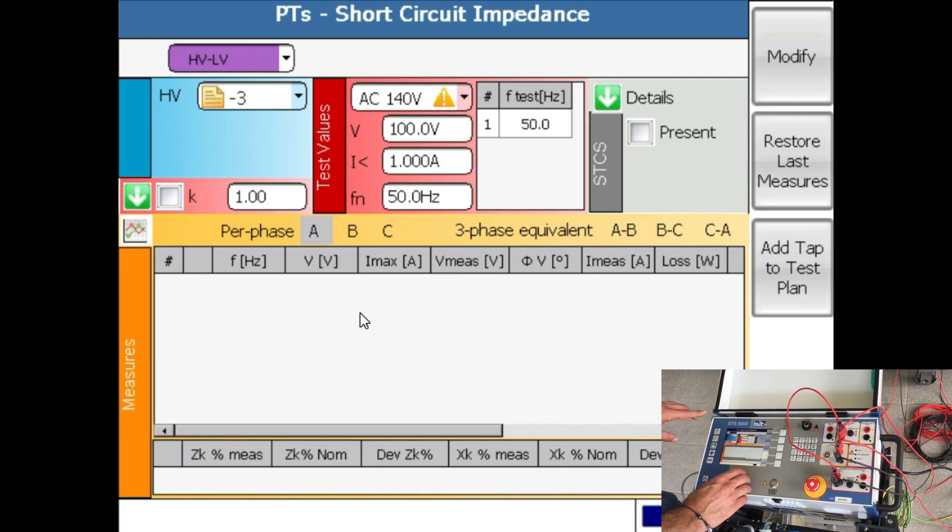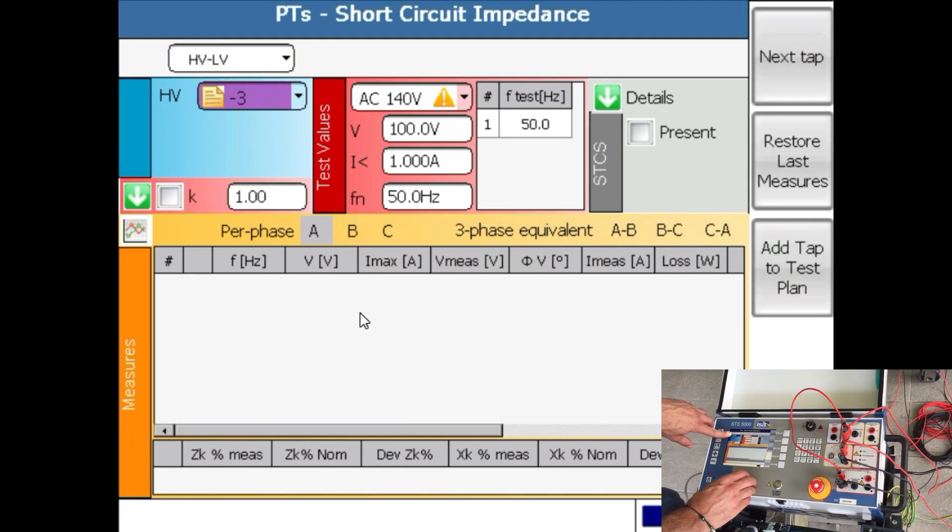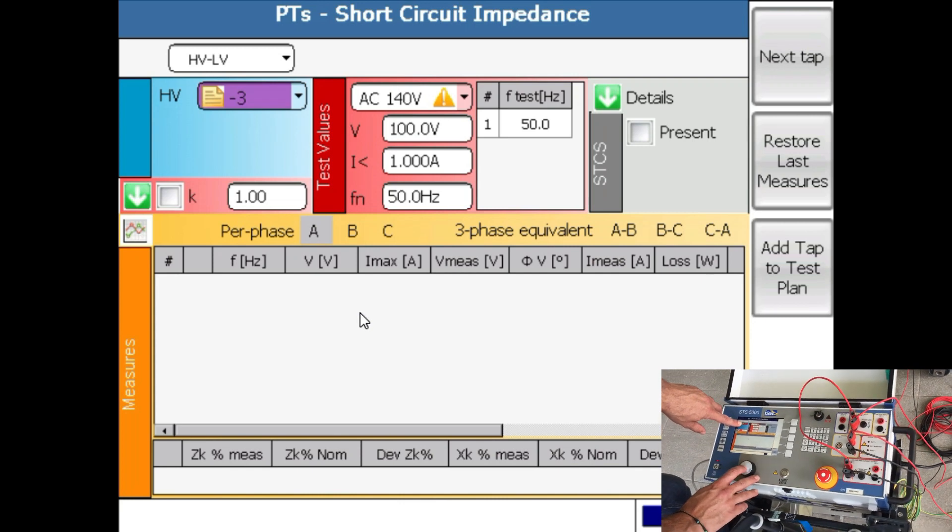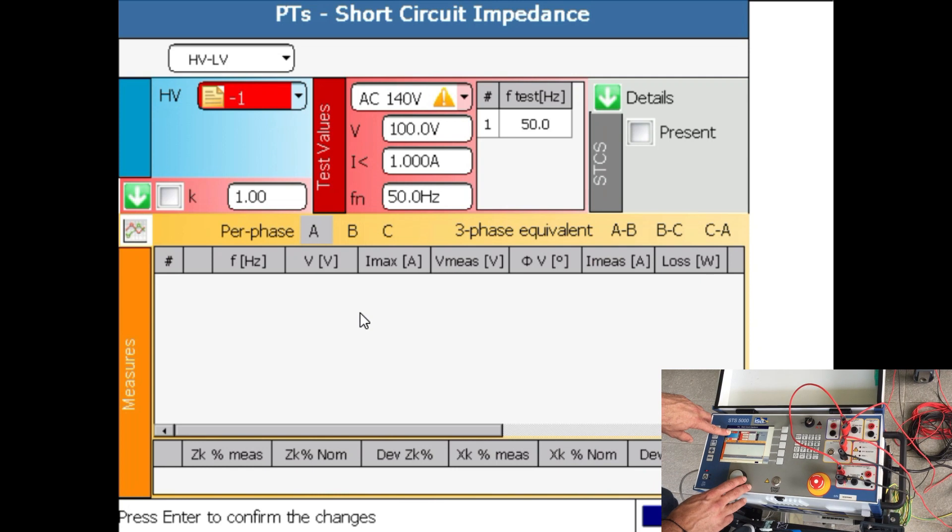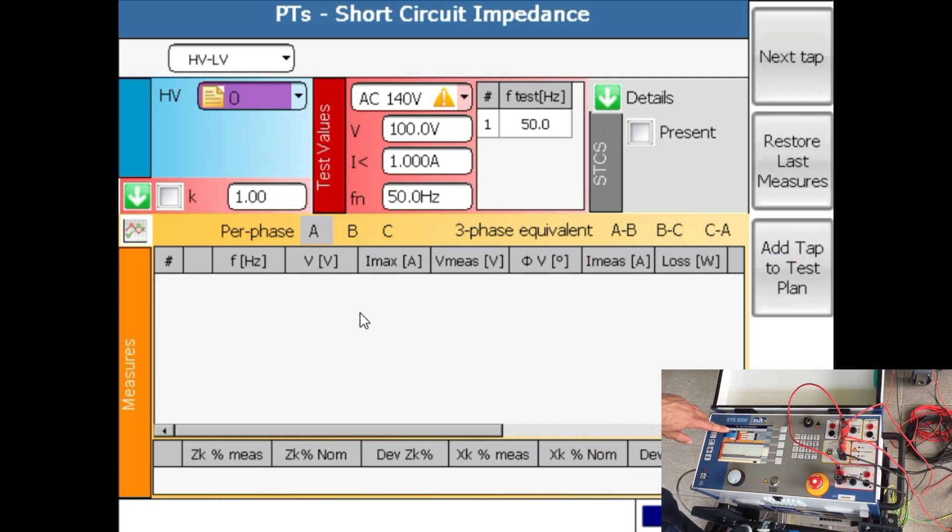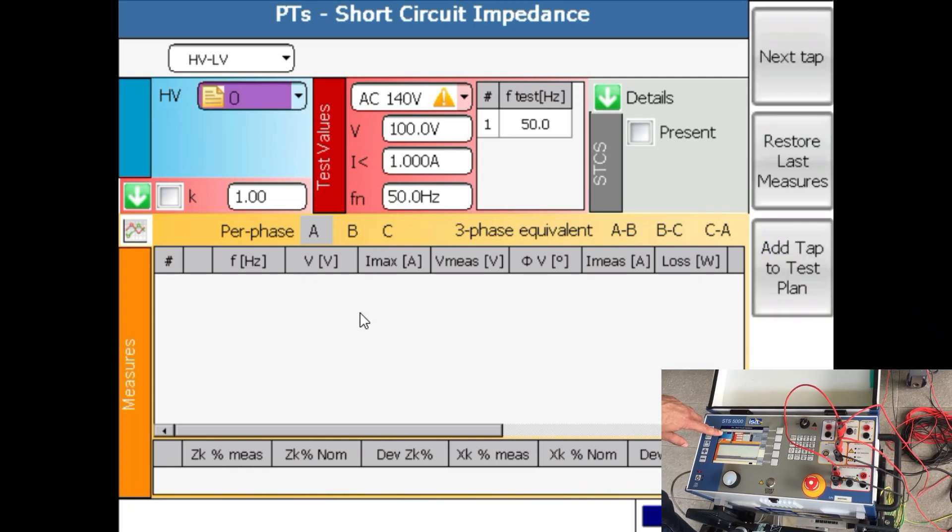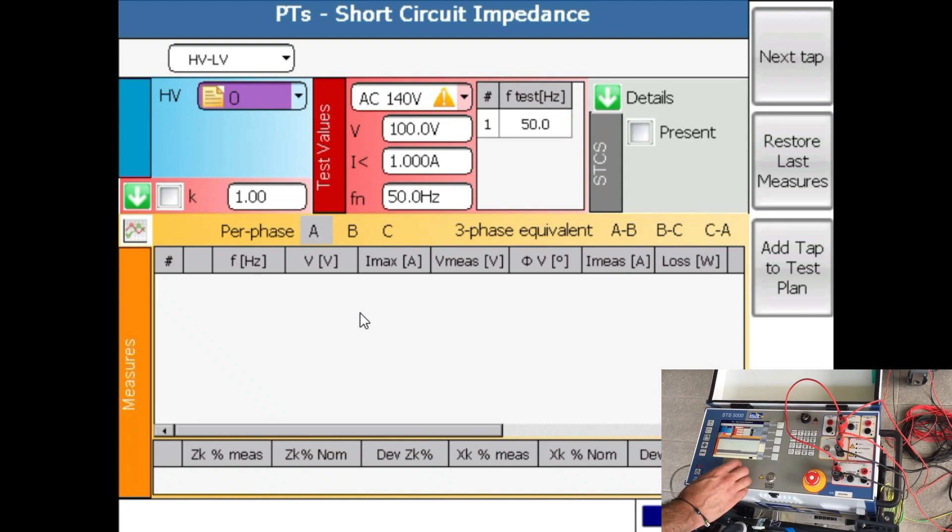You can see from the top that I'm now by default in the position minus 3. When I look at my transformer it is in position 0 so I'm going to change this to position 0. This result changes from one position to another so you have to make sure that this number is correct.